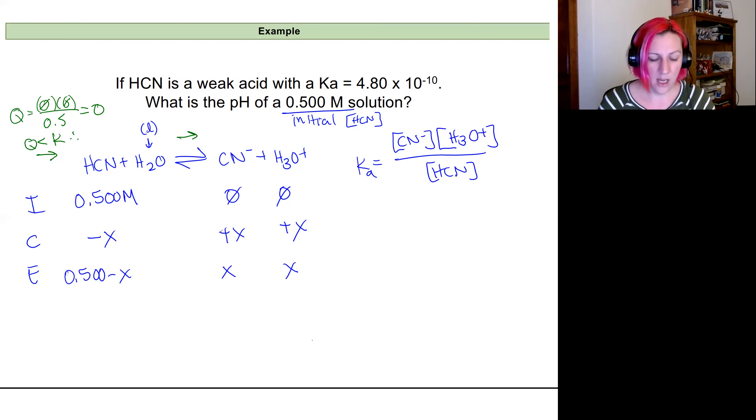My next step is to plug these values in to my equilibrium constant expression. So my Ka is 4.8 times 10 to the negative 10. That's going to be equal to X times X all divided by 0.5 minus X. All right. So now this is a bit of algebra to solve it. I am going to try to isolate X on one side and quickly find that that's not going to happen.